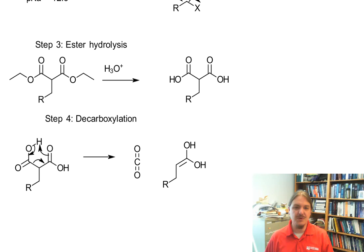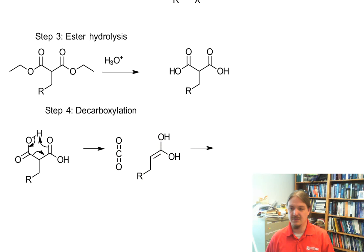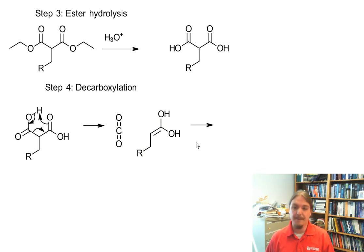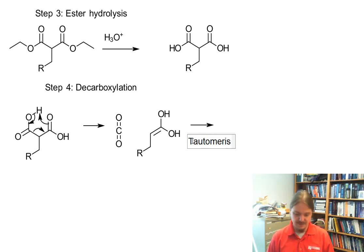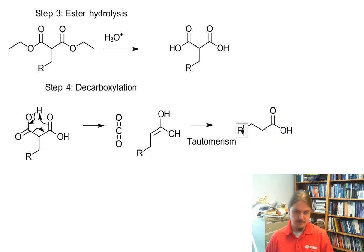This is kind of a retroene — if you had to classify this reaction, it's like an ene reaction but backwards. An ene reaction is a rare pericyclic reaction. I'm not going to draw the mechanism for the tautomerism from enol to keto form, but that's what happens here, and you get your new carboxylic acid.